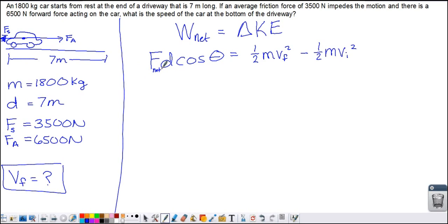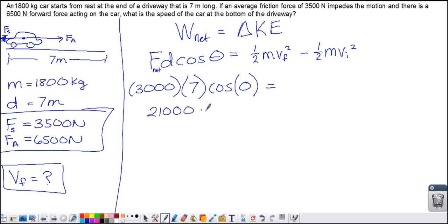Now I can start to substitute in. I need the net amount of force. We've got two forces. We'd also have a gravitational force and a normal force, but they're going to cancel each other out. So when I go to find the net force, I just need to simply subtract the two because they're going in opposite directions. So 6,500 newtons minus 3,500 newtons is 3,000 newtons times the distance traveled, which was 7 meters, times the cosine of the angle. The angle between to the right and to the right is zero. So we have 3,000 times 7 times cosine of 0, which is 1, so we end up with 21,000.